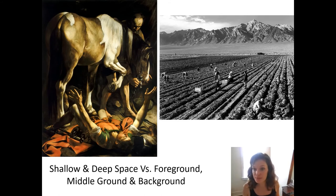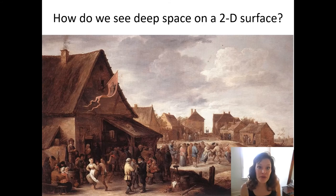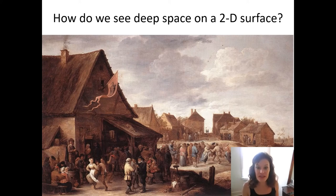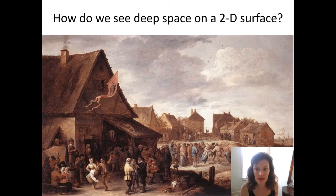Shallow and deep space describe comparisons between different artworks: the Caravaggio on the left is more shallow, the Ansel Adams on the right is more deep. Now, how do we see deep space on a 2D surface? One way is that things closer to us overlap things further away — some people overlap other people, some buildings overlap other buildings. Another way is that things further away are a bit fuzzier and lighter, while things closer are sharper with more contrast. That's atmospheric perspective.